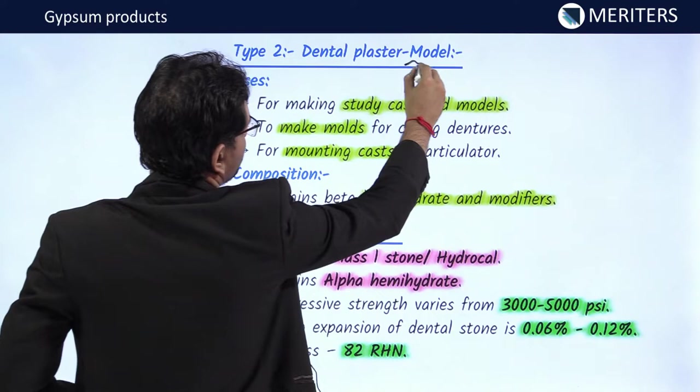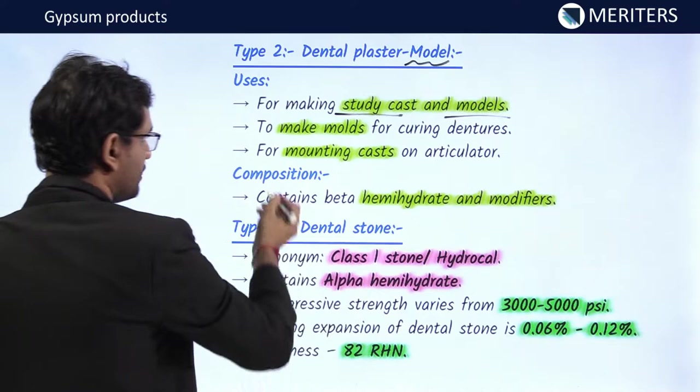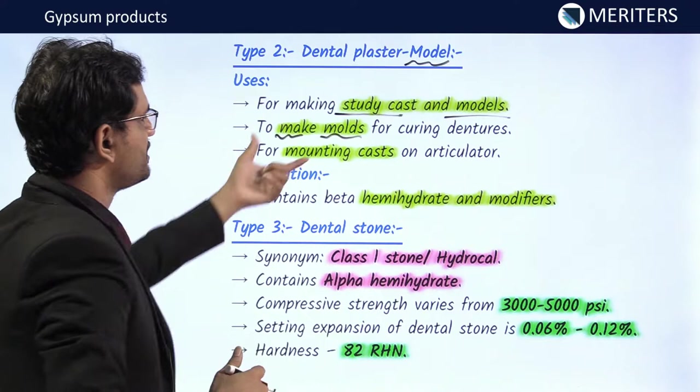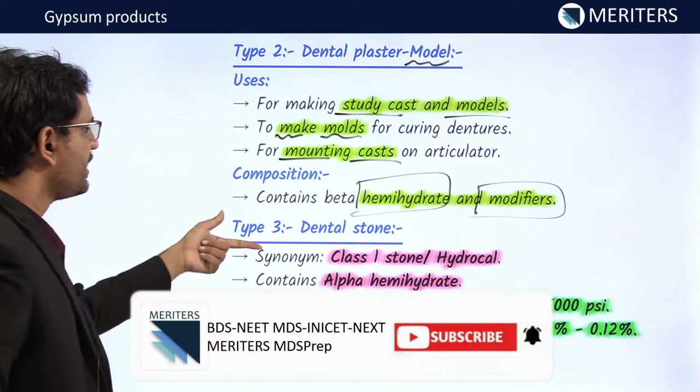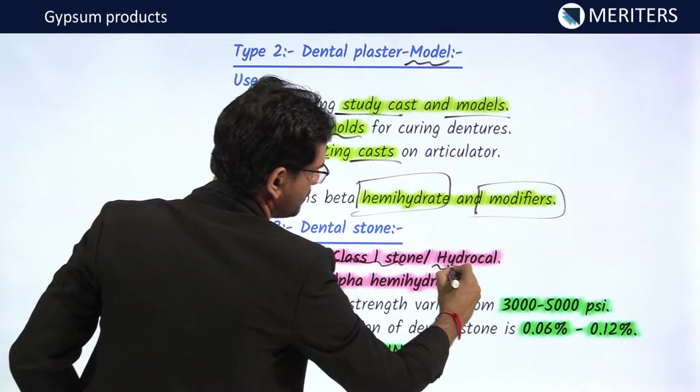Type 2, dental plaster, is used for making study casts and models. It is also used as investing material for dentures and for mounting casts on articulators. It is basically composed of beta hemihydrate and other modifiers.